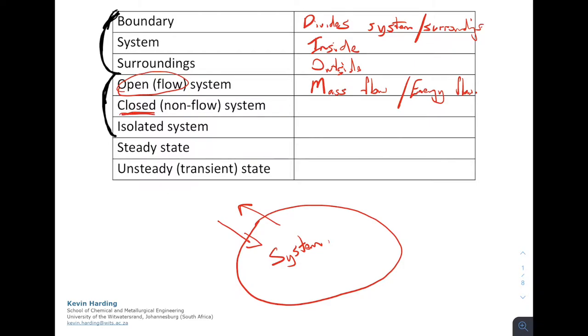On the other side, a closed system, we are now saying that something cannot come in. And in this instance, it is the mass. So no mass can flow. However, we are still allowing energy to flow into or out of the system, and that could be in the form of heat.